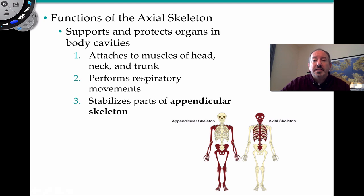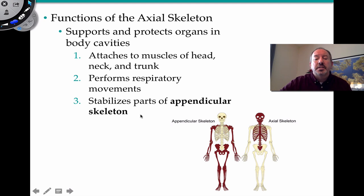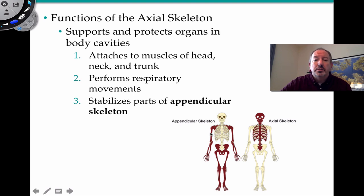The axial skeleton is all about supporting and protecting the body cavity. It's also important for attaching muscles of the head, neck, and trunk to the skeletal bones. The ribs perform respiratory movement. The axial skeleton also stabilizes the appendicular skeleton, which is composed of the arms, pelvic girdle, and legs or lower limbs.